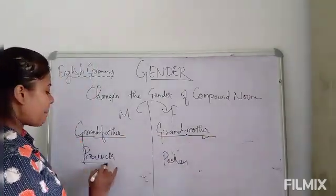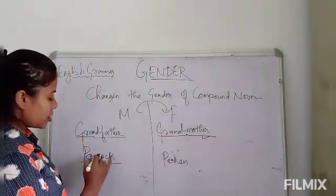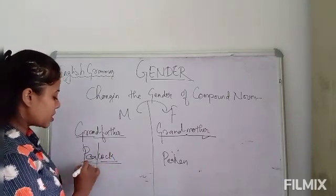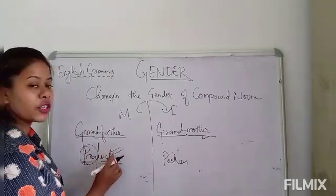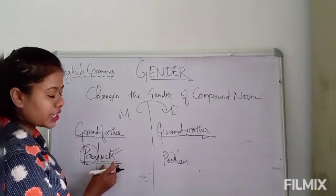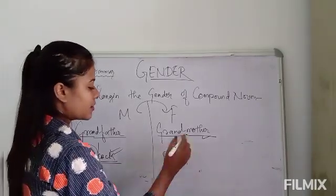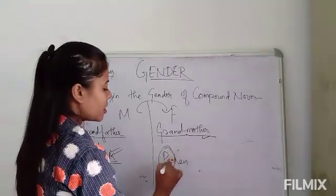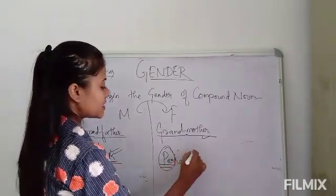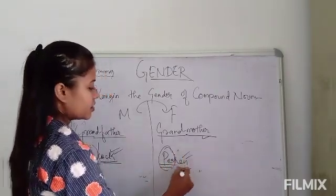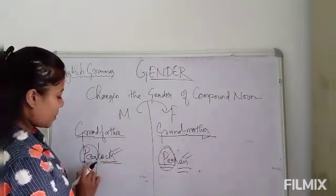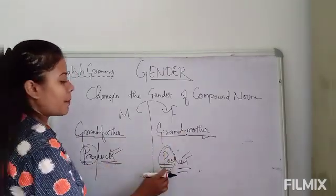Here we will see another example: 'peacock'. In the compound word 'peacock', 'pea' remains the same and only 'cock' is changed to 'hen', giving us 'peahen'. So in compound nouns, only one part of the word changes to indicate the feminine gender.